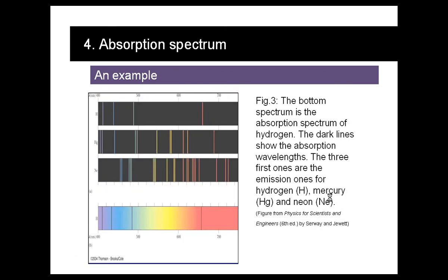This is an example of an absorption spectrum, right at the bottom of the image, where the dark lines show the wavelengths where we had absorption, and this is for hydrogen. The other ones are emission spectrums.